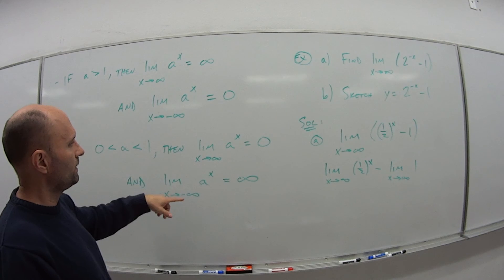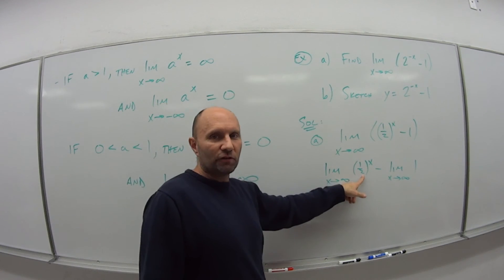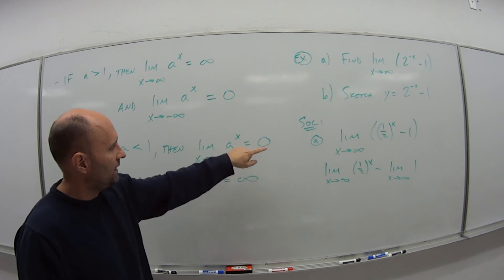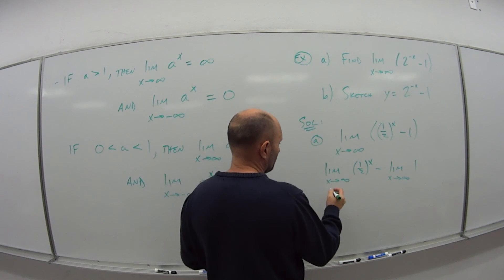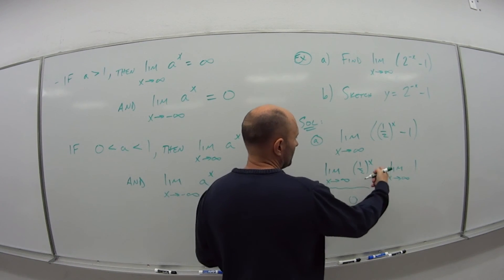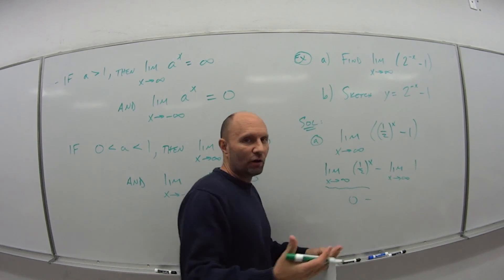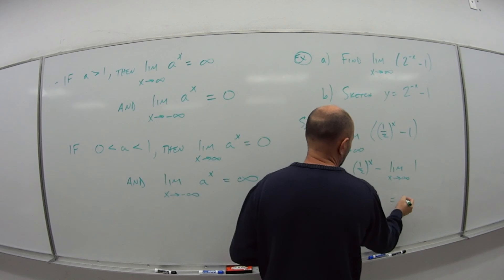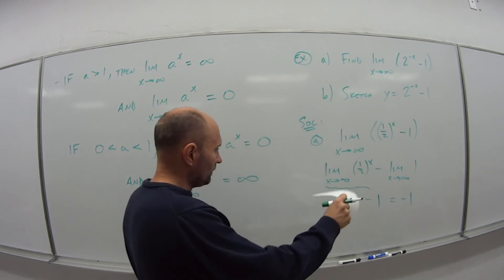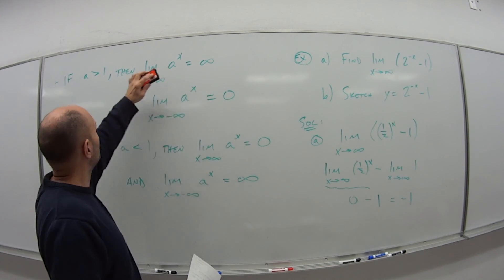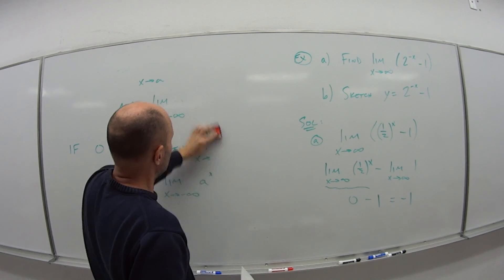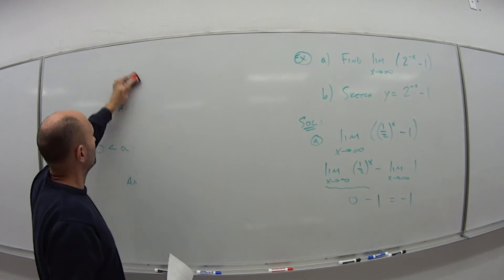So now we use what we learned here. So our a is a fraction between 0 and 1. And as we go to infinity, that means this whole first piece goes to 0. And the limit of any number no matter what x is going to is just that number which is negative 1. So the limit of the 2 to the minus x minus 1 approaches negative 1 as x approaches infinity.